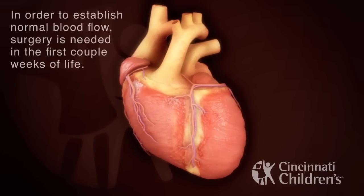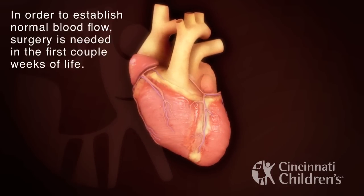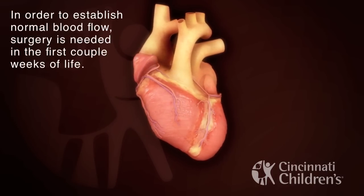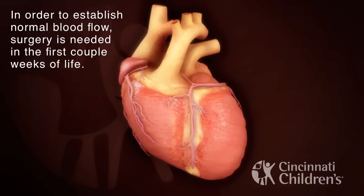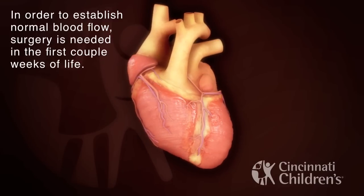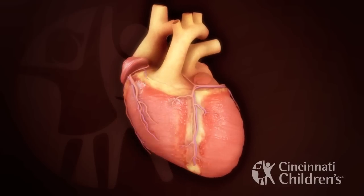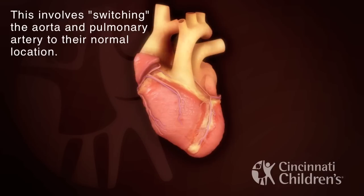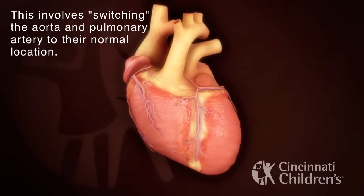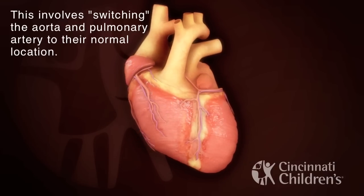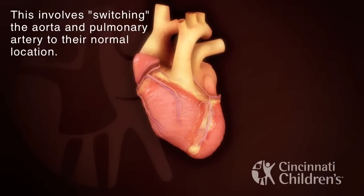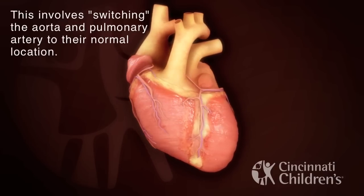In order to establish normal blood flow, surgery is needed in the first couple weeks of life. This involves switching the aorta and pulmonary artery to their normal location.